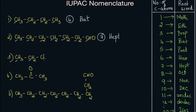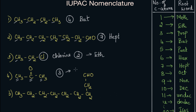In the next compound, we have one, two — but wait, is this a carbon atom? No, this is chlorine, and chlorine is not carbon. So the total number of carbon atoms present are two. The root word for two carbons is eth, and you can see eth here. For the next compound, one, two, three — three carbon atoms, so the root word used is prop. For the fifth compound, one, two, three, four, five, six, seven, eight, nine — nine carbon atoms. The root word for nine is non.